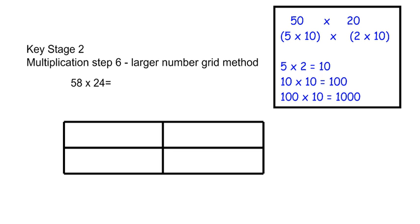Next step is when we're looking at long multiplication. So here we've got 58 multiplied by 24. Again we start by partitioning. So we've got 50 and 8 and 20 and 4.